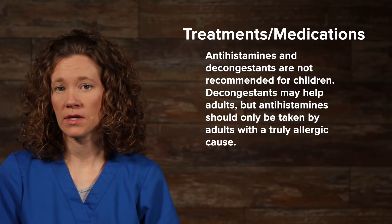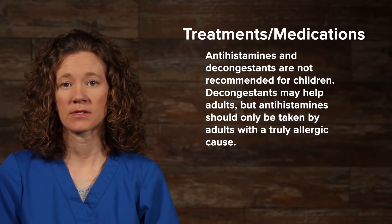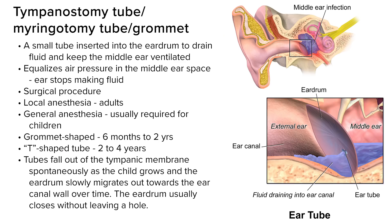If a patient has acute otitis media three or more times in six months, or four or more times in a year, tympanostomy tubes are recommended. A tympanostomy tube, also known as a myringotomy tube or grommet, is a small tube inserted into the eardrum to drain fluid and keep the middle ear ventilated. By equalizing air pressure in the middle ear space, the ear stops making fluid. Fluid in the ears impairs hearing and serves as a culture medium for bacteria, so it is important to avoid a buildup of fluid in the middle ear space.